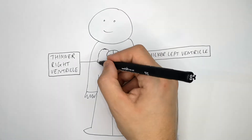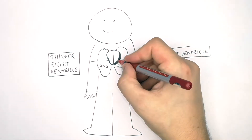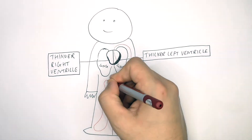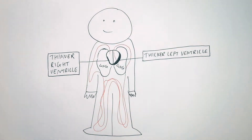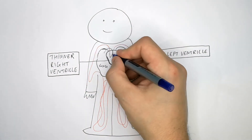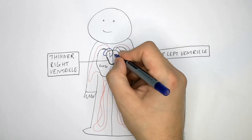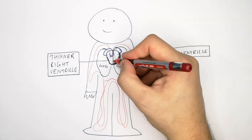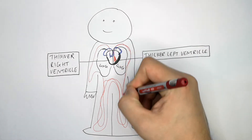I'm now drawing the lungs to explain the differences. As you can see, the left ventricle pumps blood all the way around the body, so it needs to be thicker, whereas the right ventricle needs to be thinner because it pumps blood a shorter distance — only to the lungs. The left ventricle muscle pumps blood all the way around the body.